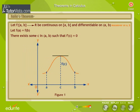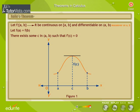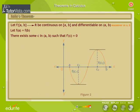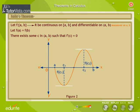Observe Figure 1. The slope of the tangent to the curve becomes zero at one point, meaning the derivative of f(x) at that point is zero. Observe Figure 2. The slope of the tangent to the curve becomes zero at two points, meaning the derivative of f(x) at those two points is zero.